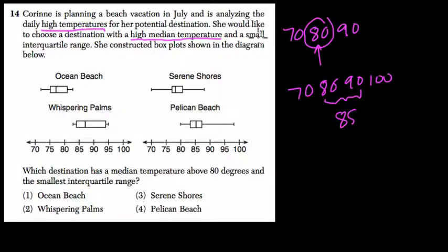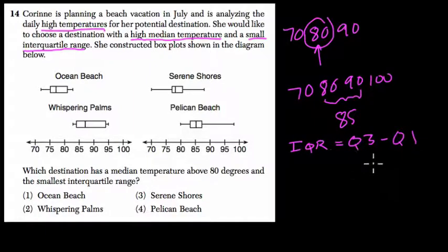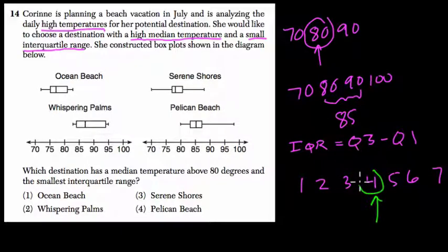And a small interquartile range. Interquartile range - usually I write IQR for interquartile range - represents the third quartile minus the first quartile. So for example, if we have the numbers 1, 2, 3, 4, 5, 6, and 7, 4 is the median. We call it Q2. So in our cases before, the median is just Q2, the second quartile.